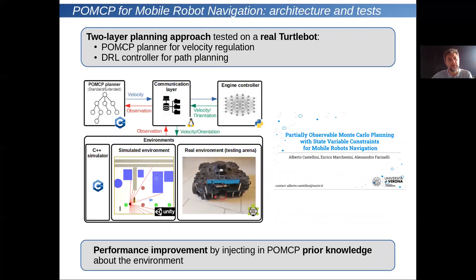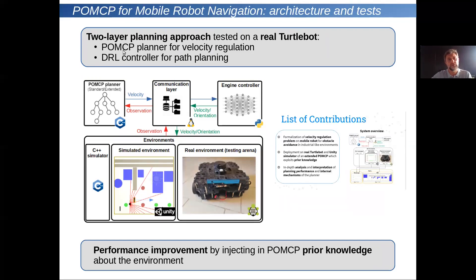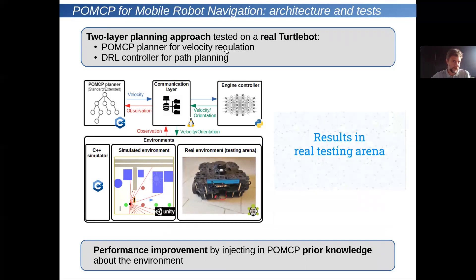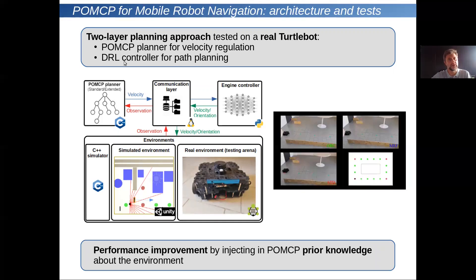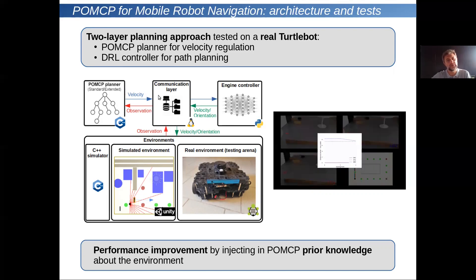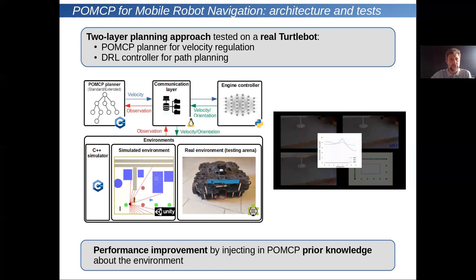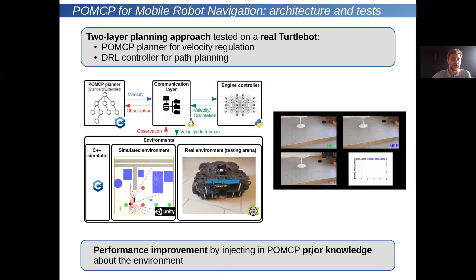The second research line was about the application of POMCP to mobile robot navigation. We developed a two-layer planning approach tested on a real Turtlebot. The first layer uses a POMCP planner for velocity regulation, while a deep reinforcement learning controller handles path planning. We also developed a communication layer between the two components. As shown in the video, we managed to make POMCP work on a real Turtlebot, and by injecting prior knowledge into POMCP, we achieved performance improvement in this case as well.